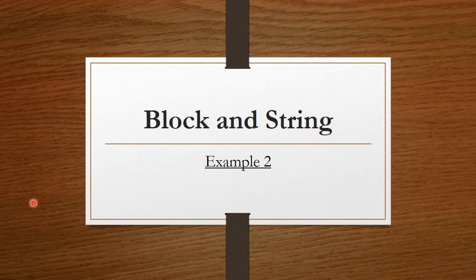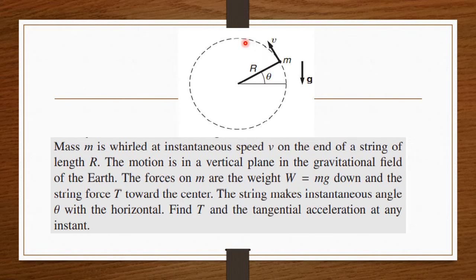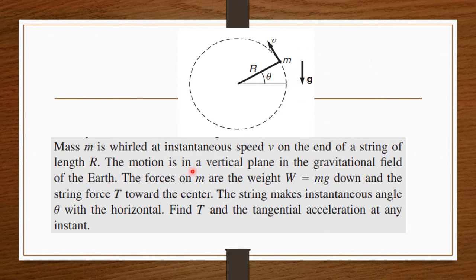Hello students. Our next example is the case of a block and string, in which we are also considering the gravitational force. A mass m is whirled at an instantaneous speed v at the end of a string of length r. The motion is in a vertical plane in the gravitational field of the earth.